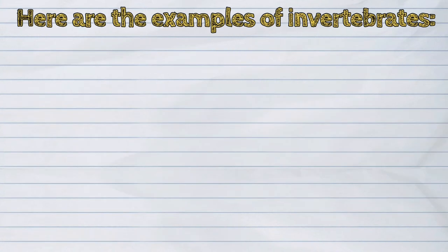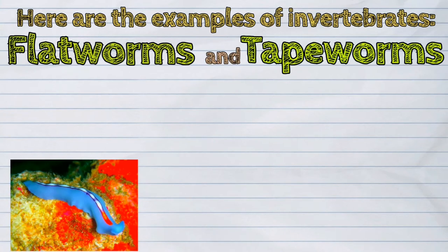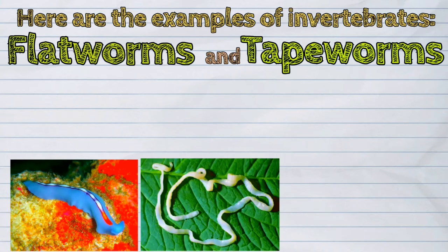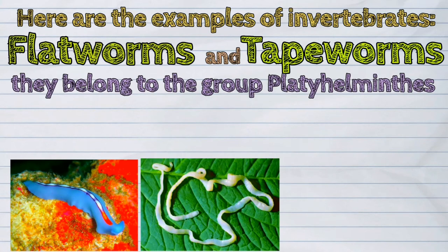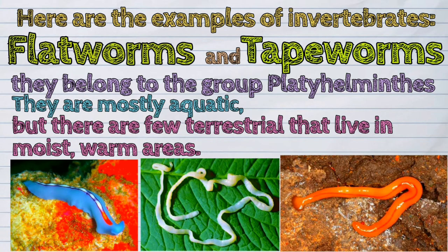The third example of invertebrates are the flatworms and tapeworms, which belong to the group Platyhelminthes. They are mostly aquatic, but there are few terrestrial species that live in moist, warm areas.